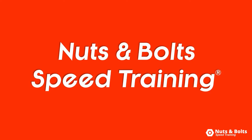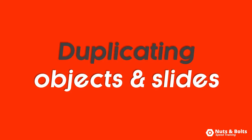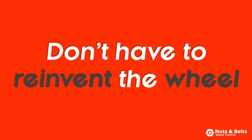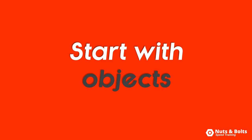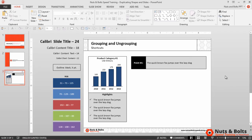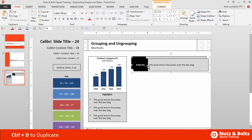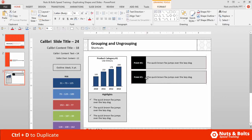This is Nuts and Bolts speed training with keyboard shortcuts for duplicating your objects and slides, which is useful so that you don't have to reinvent the wheel every time you need a new object or slide layout. Let's start with duplicating objects. Here in PowerPoint, to duplicate an object, simply select the object and hit Ctrl+D on your keyboard to duplicate it, which is twice as fast as a normal copy and paste.